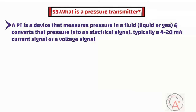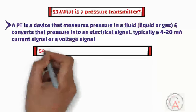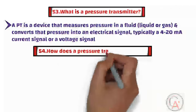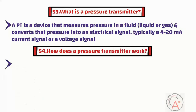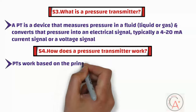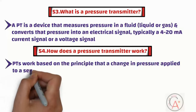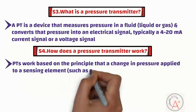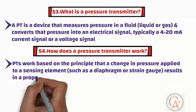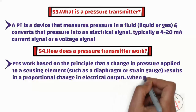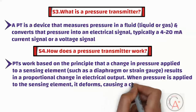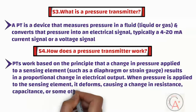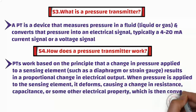Question fifty-four is: how does a pressure transmitter work? Pressure transmitters work based on the principle that a change in pressure applied to a sensing element such as a diaphragm or strain gauge results in a proportional change in electrical output. When pressure is applied to the sensing element, it deforms, causing a change in resistance, capacitance, or some other electrical property, which is then converted into an electrical signal that represents the pressure.